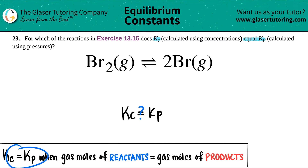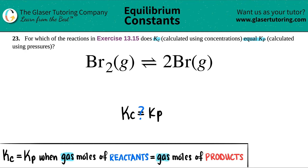Kc equaling Kp only happens when the gas moles of reactants equals the gas moles of the products. It's very specific — only look at the gases.